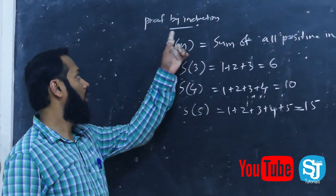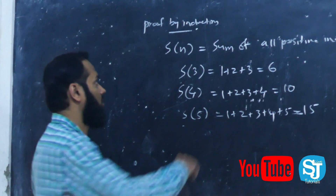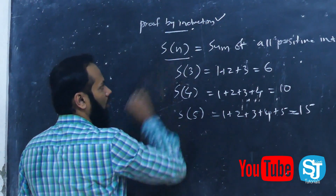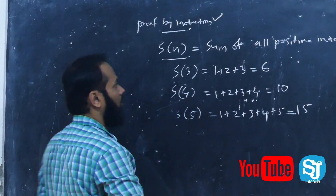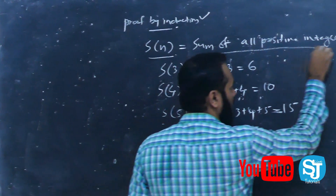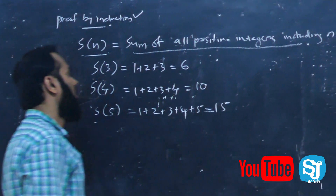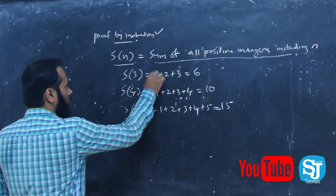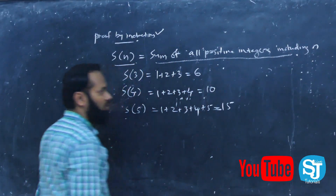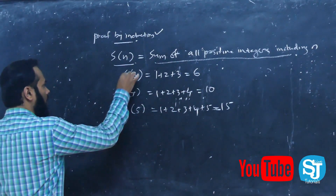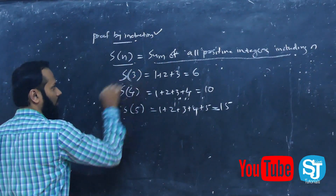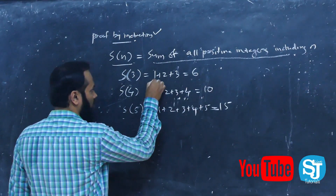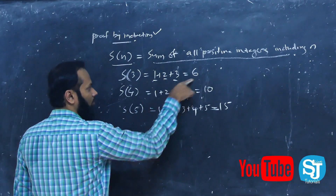Let's try to prove by induction. S of n is equal to the sum of all positive integers up to n. For example, S of 3 is equal to 1 plus 2 plus 3, which equals 6.